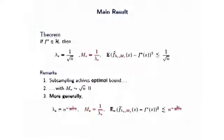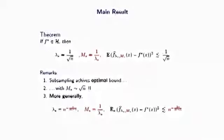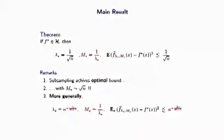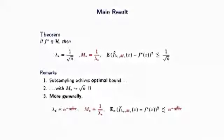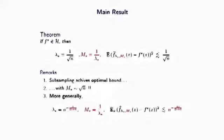Moreover, our result holds even in the general case — we have the same optimal bound as kernel ridge regression. If the problem is simple, we need a number of centers even smaller than square root of N. And this is good news.